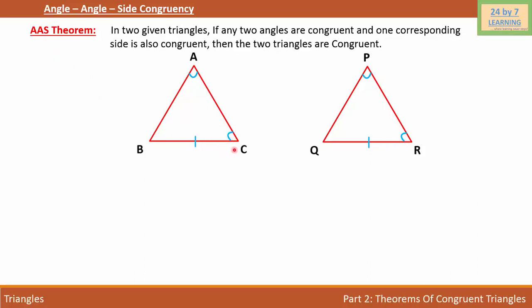We can say that if angle A is congruent to angle P, angle C is congruent to angle R, which is over here, and side BC is congruent to QR, which is over here, then triangle ABC is congruent to angle PQR.